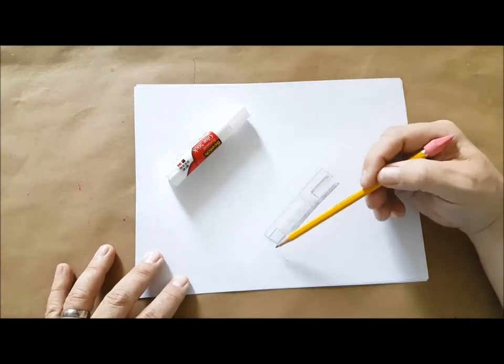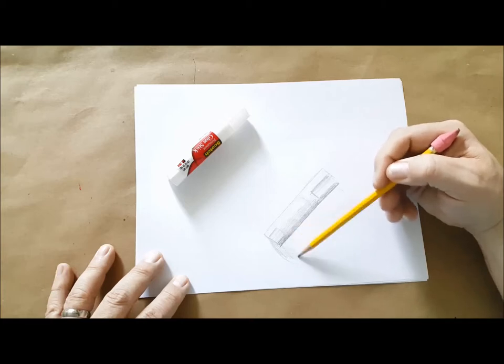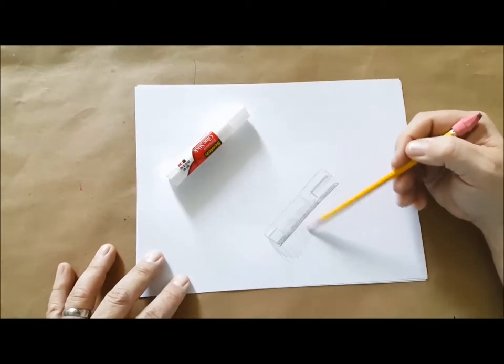Then I have shadows on the ground. I'm going to go ahead and color those in. And I'm kind of going in the direction of the paper going away from the object.